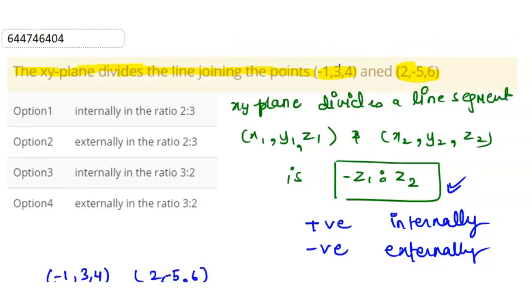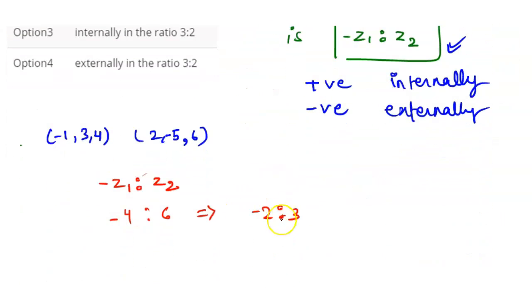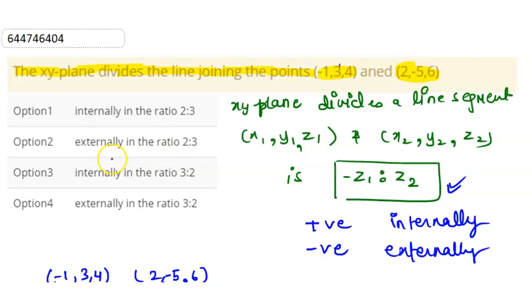It means that the plane is dividing the line segment externally because the result is negative, externally in the ratio 2:3. So our final answer is externally 2:3, option 2.